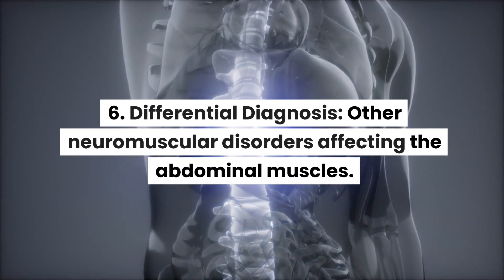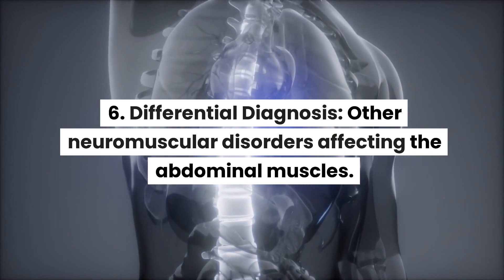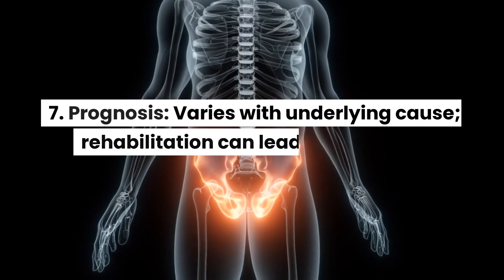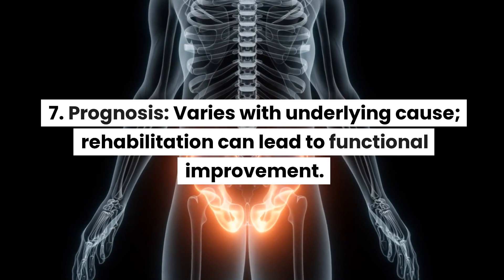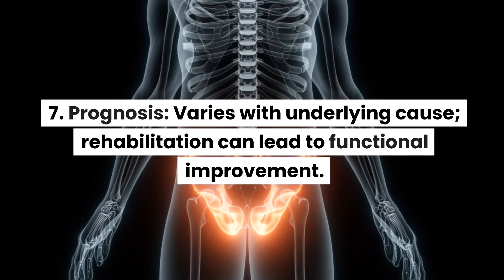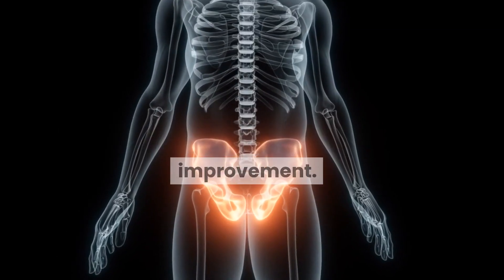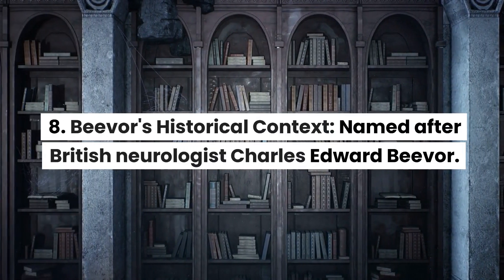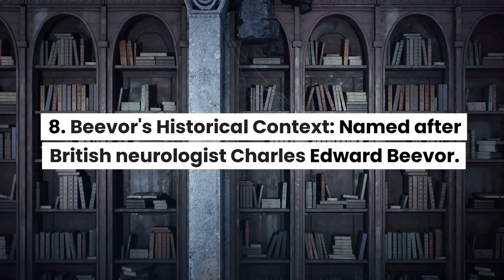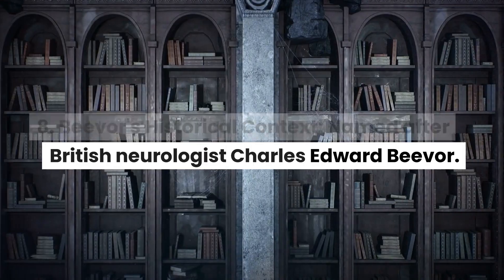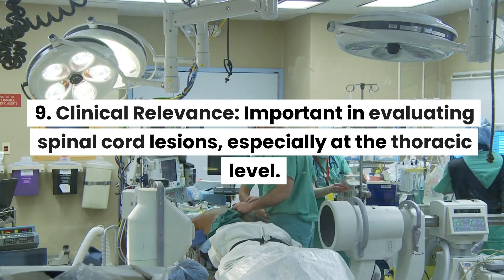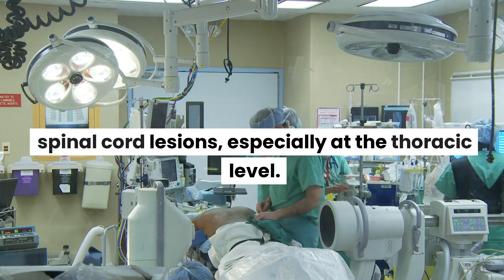Differential diagnosis includes other neuromuscular disorders affecting the abdominal muscles. Prognosis varies with the underlying cause, and rehabilitation can lead to functional improvement. Bevor Sign is named after British neurologist Charles Edward Bevor. It is clinically relevant in evaluating spinal cord lesions, especially at the thoracic level.